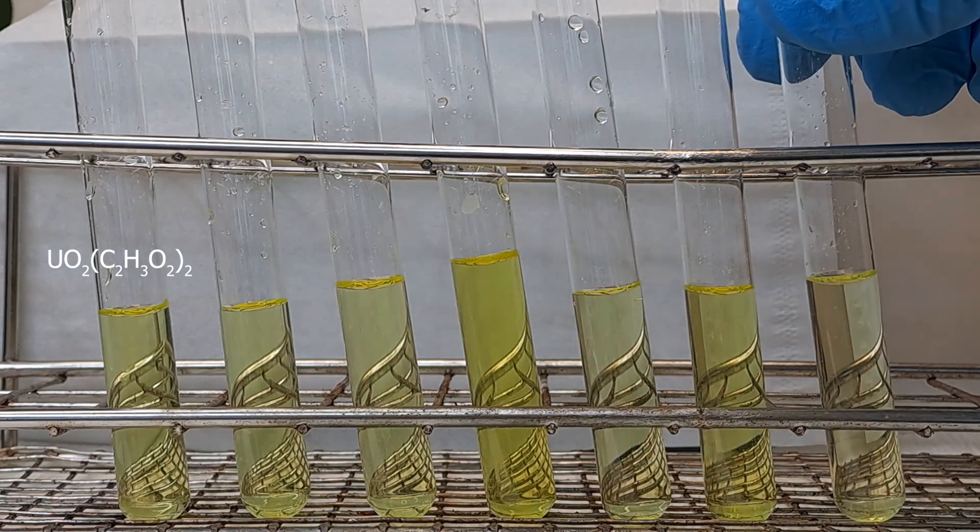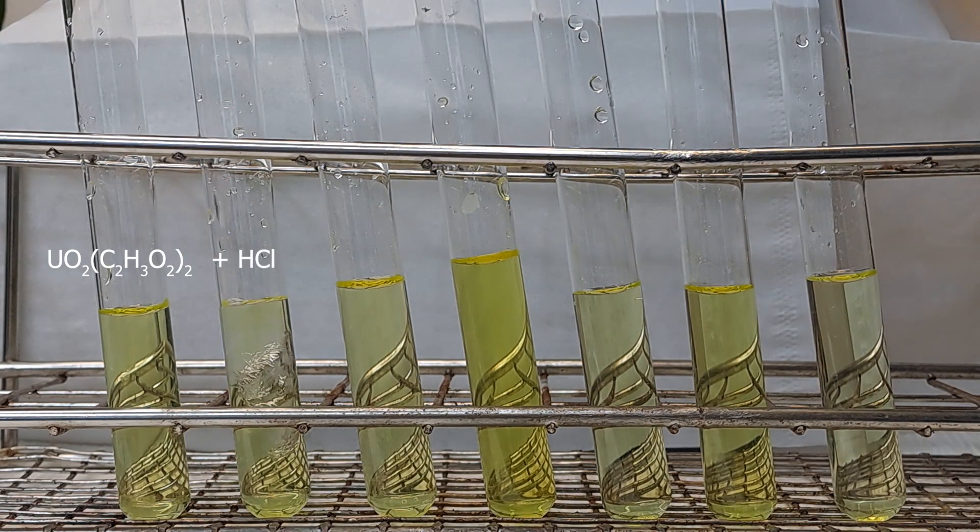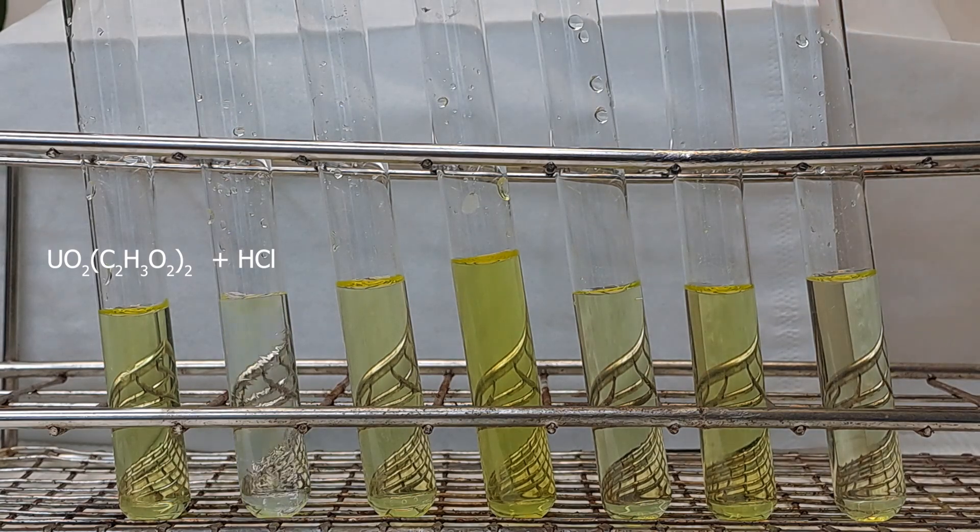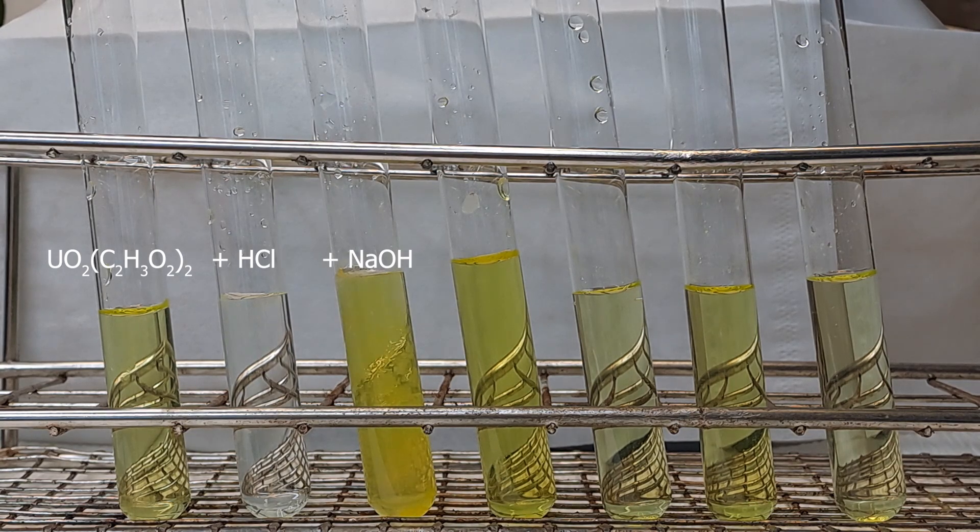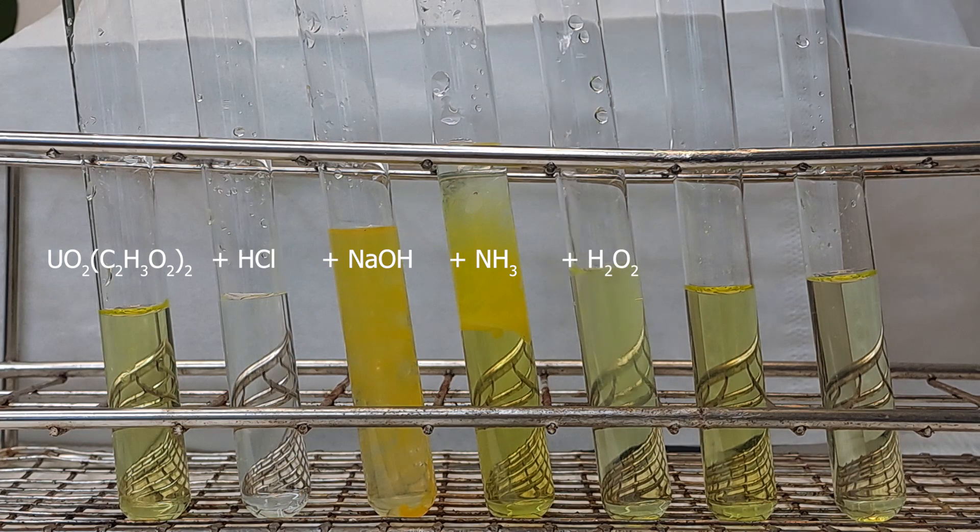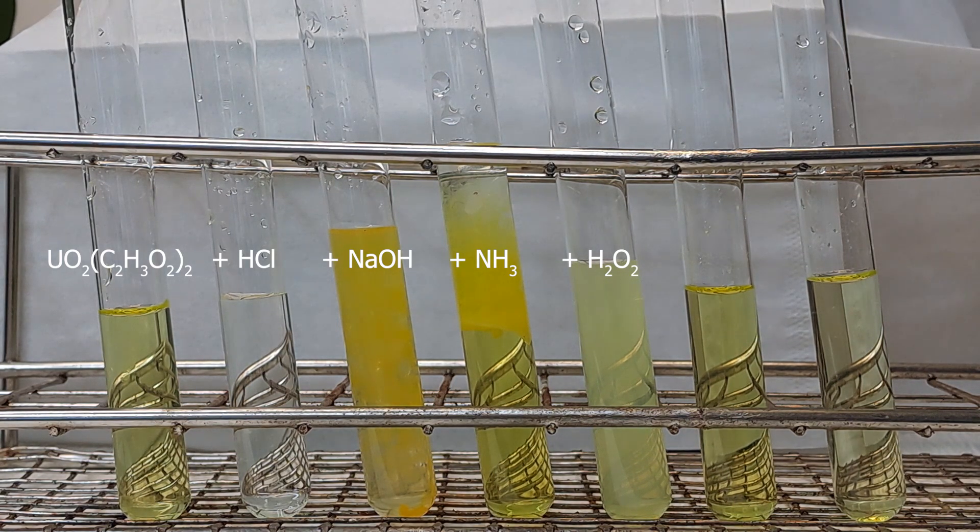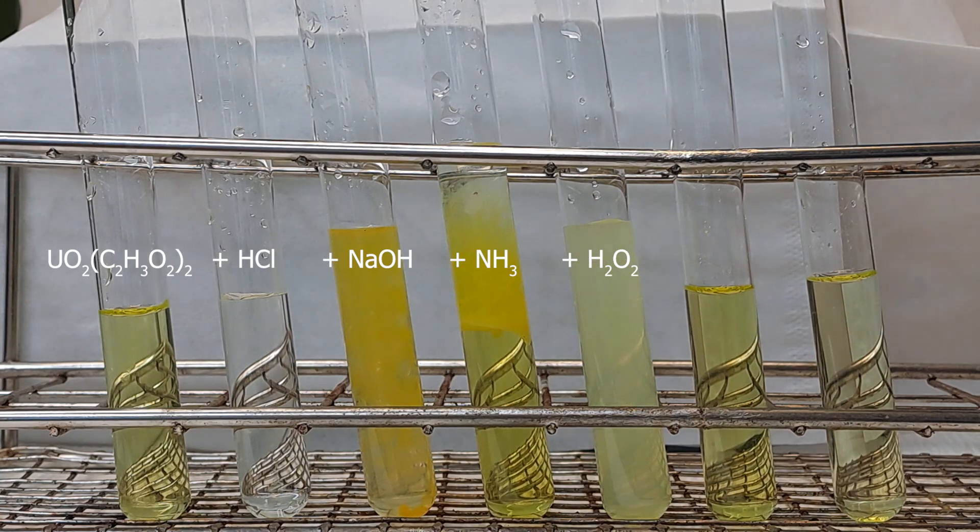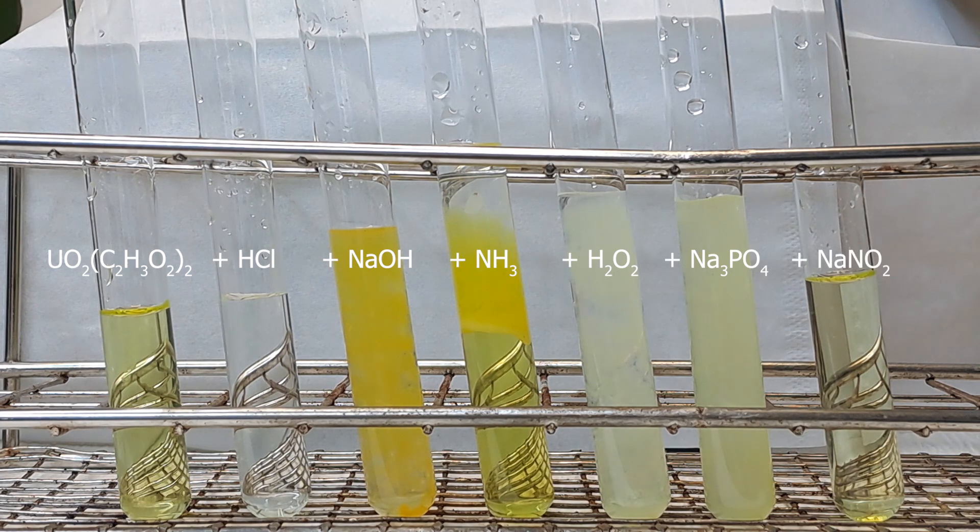Test tube 1 contains only distilled water and now something has happened that I still can't explain after weeks. When 4 molar HCl is added, a decolorization occurs. Adding 6 molar sodium hydroxide causes the formation of a dark yellow flaky solid. Adding concentrated ammonia solution results in a similar yellow flaky precipitate. When 12% hydrogen peroxide is added, a much lighter and finer precipitate forms. Compared to the peroxide, a darker but still light yellow solid forms upon adding sodium phosphate. Adding sodium nitrite causes no noticeable change.